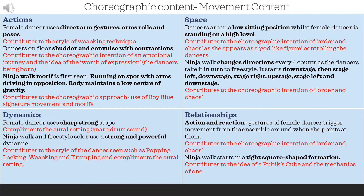The dancers start on the floor, shudder and convulse, and use different contractions. This contributes to the idea of an emotional journey. Kenrick also says this is the womb of expression, as if the dancers are being born at this moment — which is in line with the section being called Genesis. This is also the first time the ninja walk motif is seen: running on the spot with arms driving in opposition and the body maintaining a low centre of gravity. This contributes to the choreographic approach — the use of Boy Blue signature movement and motifs.